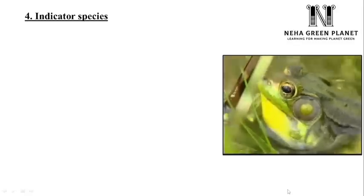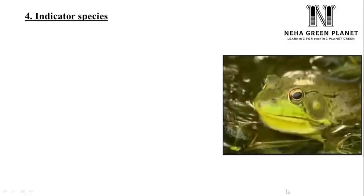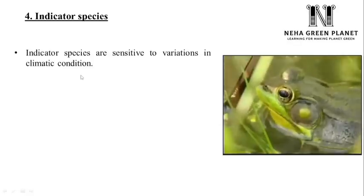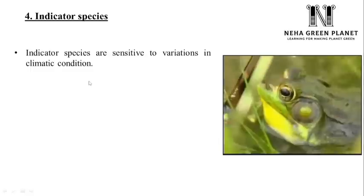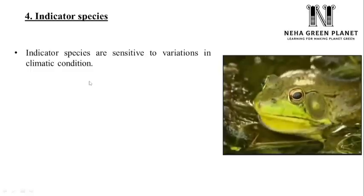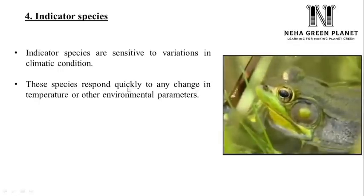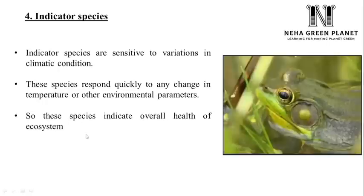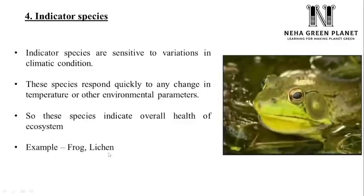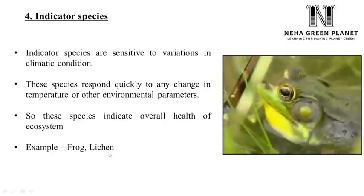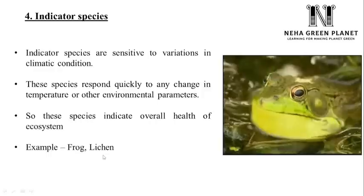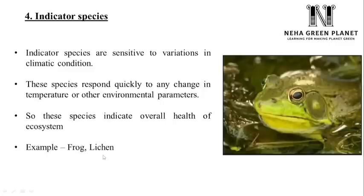The fourth term is indicator species. Indicator species are very sensitive to variations in climatic parameters — even slight changes in temperature, carbon dioxide, or any other parameter cause them to respond very quickly. These species indicate the overall health of the ecosystem. For example, frog and lichen can survive only in totally unpolluted places — if a place has even a slight amount of pollution, these species either die or move out. So indicator species indicate the overall health of the ecosystem and are very sensitive to climatic conditions.